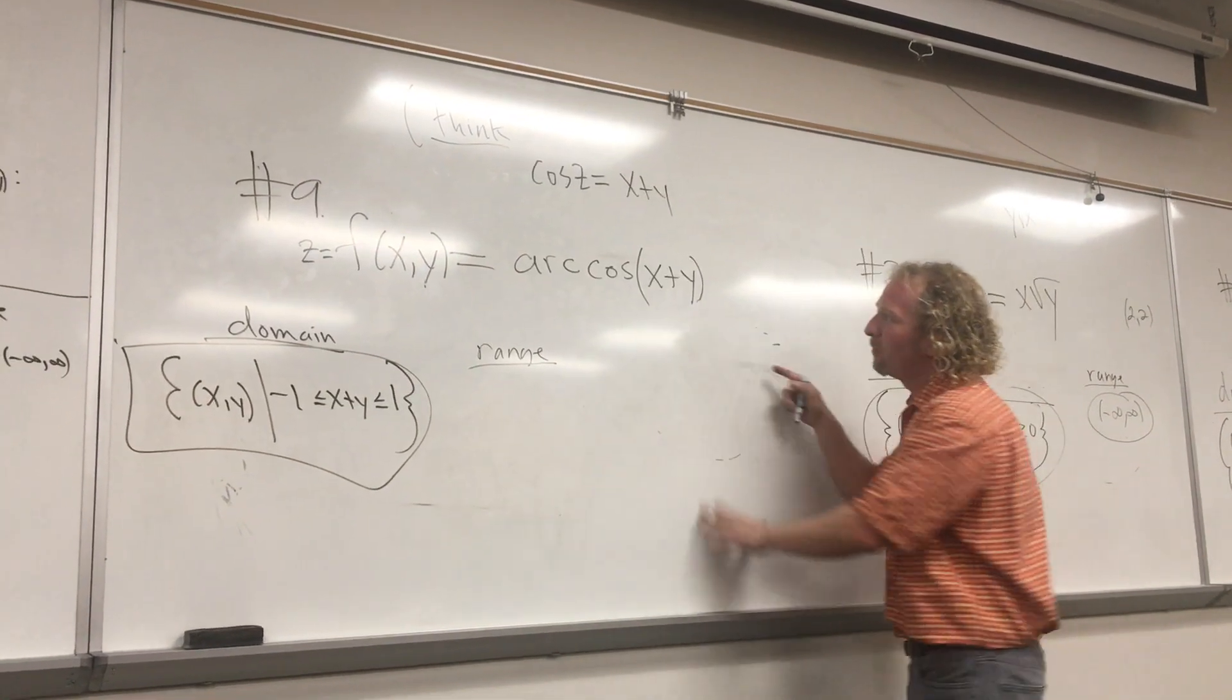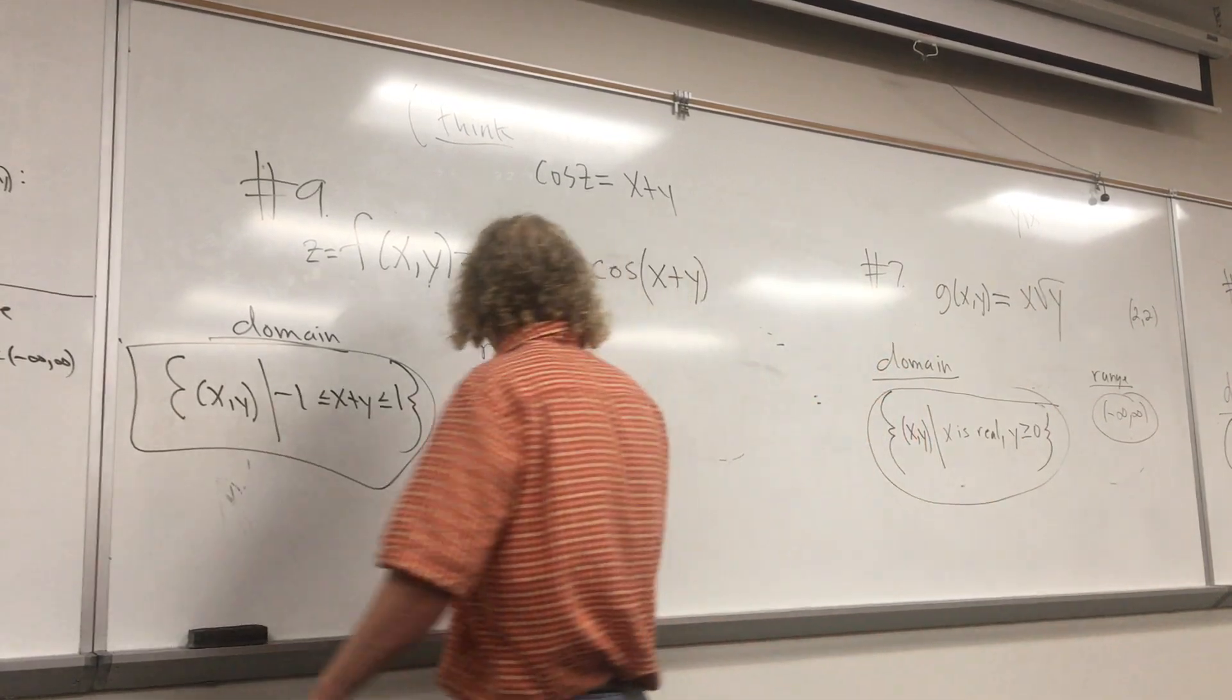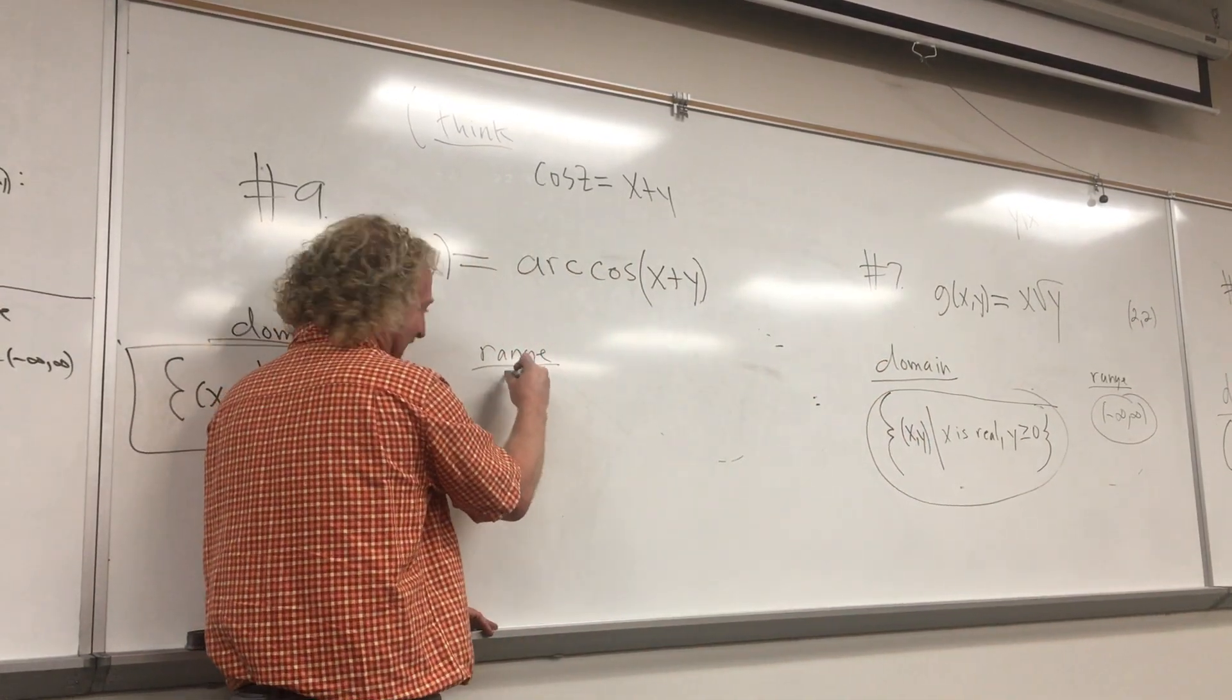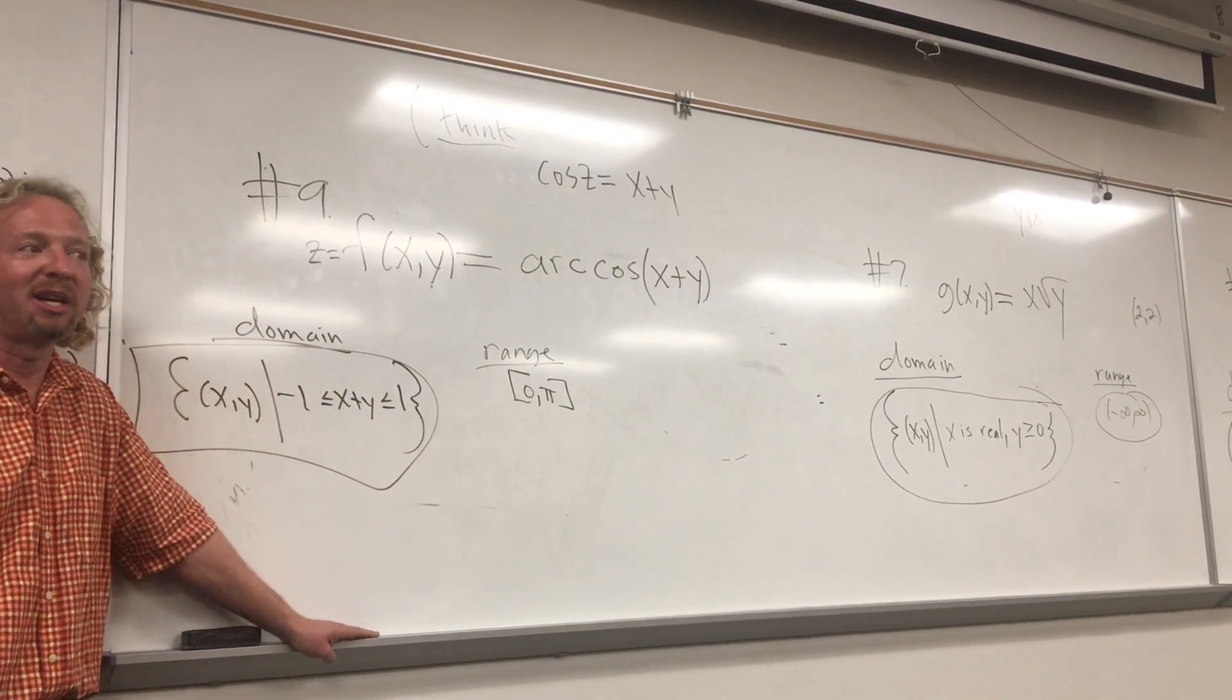This one takes a little bit more work. This you have to dig deep. The range of arc cosine, remember what it was? Zero to pi. Zero to pi. So that's just from memory. That's just knowledge. Okay. How do you know that?